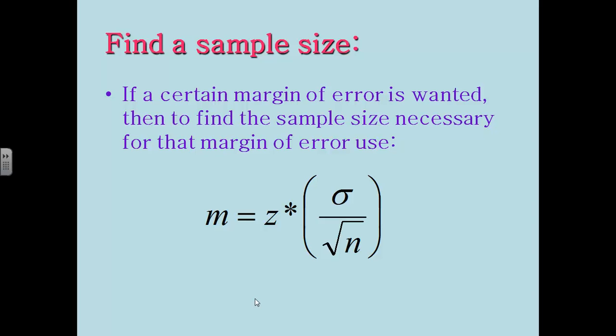The last little thing I'm going to talk about here is if you need to find a sample size. So if we have a certain margin of error that we want to achieve, sometimes we're asked to find the sample size that's necessary in order to get that margin of error. And to do that we have to remember that our margin of error formula is given by z star times sigma divided by the square root of n. Always round up to the nearest person. We can't have half a person so we always round up.